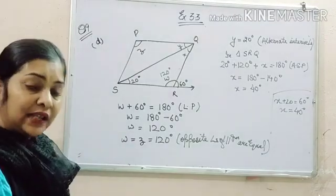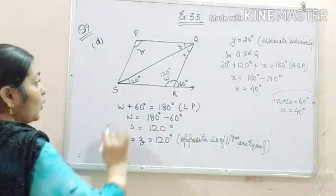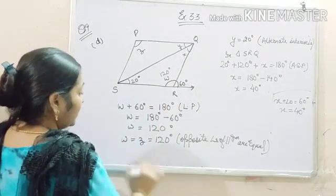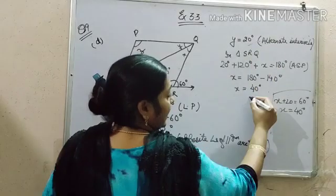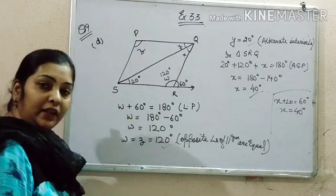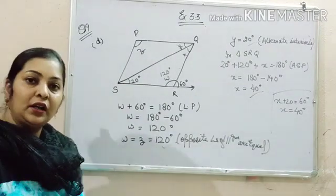So you can use any method in it. We get all the unknown quantities over here. Our z is 120 degree, our y is 20 degree, and x is 40 degree. So this solves our problem.